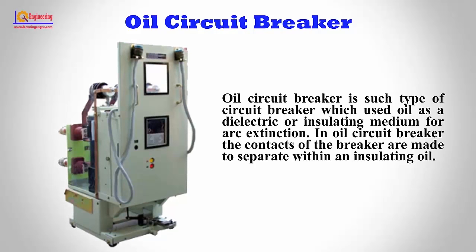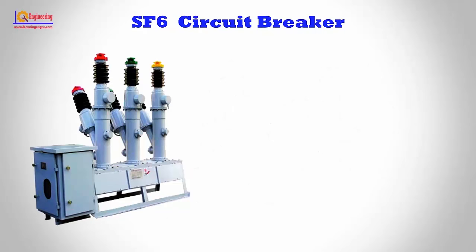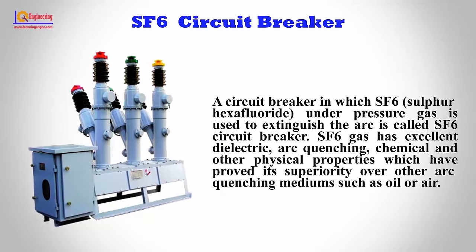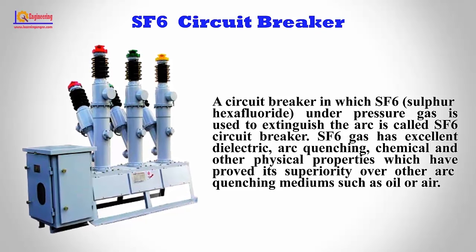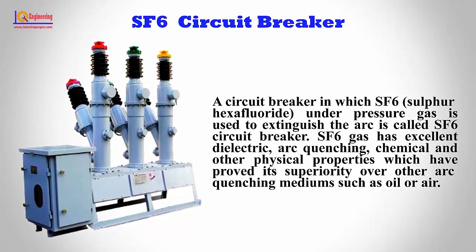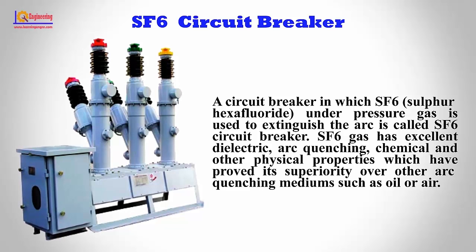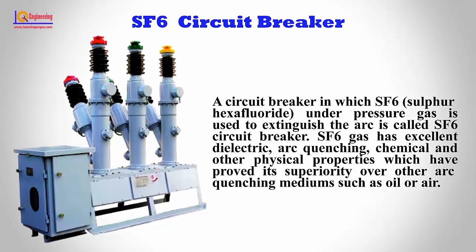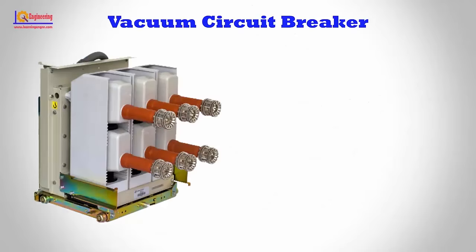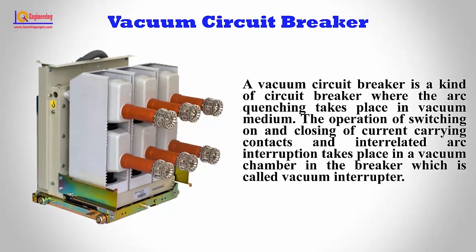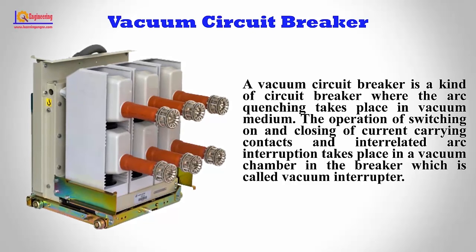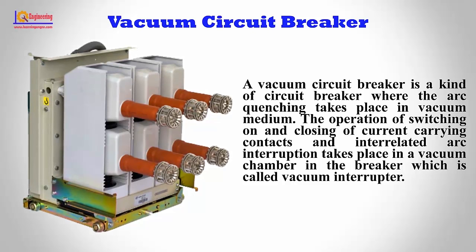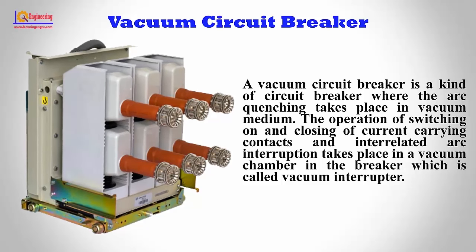In an Oil Circuit Breaker, the contacts of the breaker are made to separate within an insulating oil. In an SF-6 Circuit Breaker, SF-6 gas under pressure is used to extinguish the arc. SF-6 gas has excellent dielectric, arc quenching, chemical, and physical properties which have proved its superiority over other arc quenching mediums such as oil or air. In a Vacuum Circuit Breaker, arc quenching takes place in a vacuum medium; the switching and arc interruption occur inside a vacuum chamber called a vacuum interrupter.